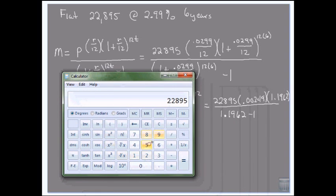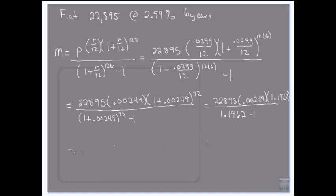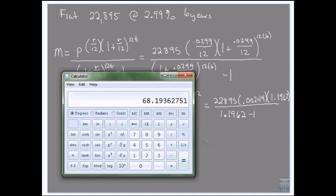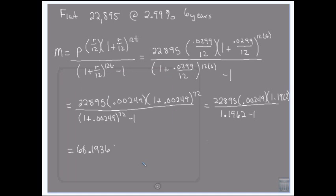So I have for the top, now, 22,895 times 0.00249 times 1.1962.